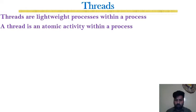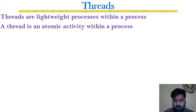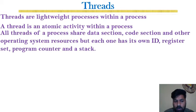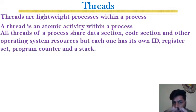Within a process there could be multiple activities, as we can see in web browsers. Similarly, a server computer can have multiple threads to deal with multiple incoming requests from clients. All threads of a process share the data section, code section, and other operating system resources, but each one has its own ID, register set, and program counter. The logic behind lightweight processes is that threads share the address space of the process and have their own register set and context, making context switching very quick.